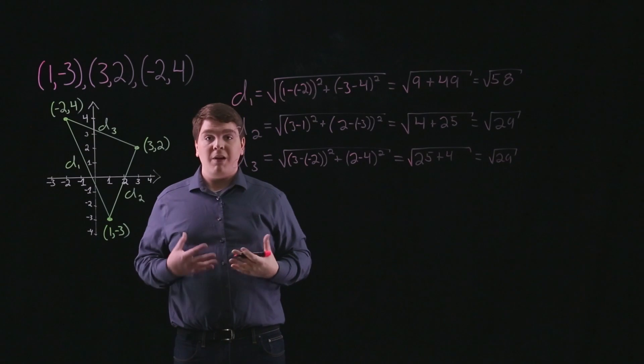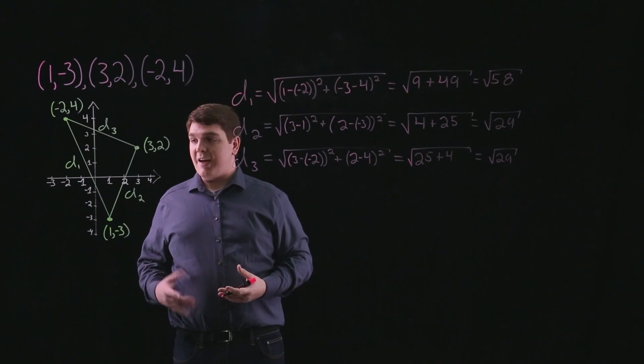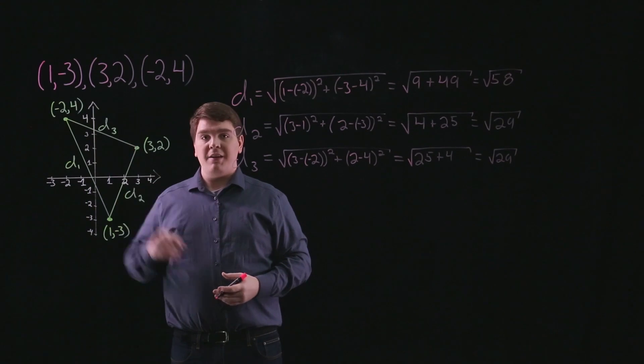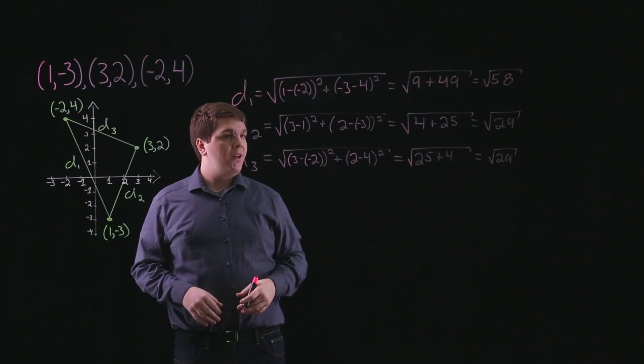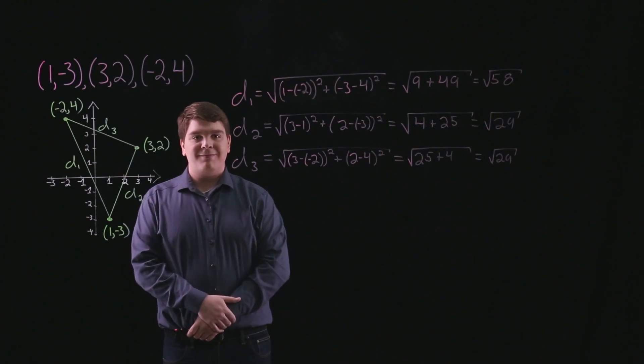Now since d2 and d3 are both equal to the square root of 29, we have that the side lengths d2 and d3 are of the same length. Thus, our triangle is an isosceles triangle. Thank you.